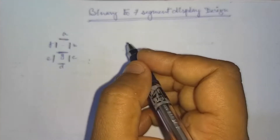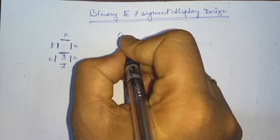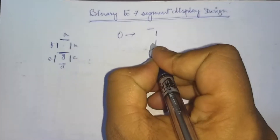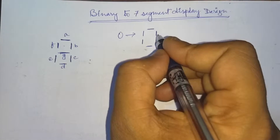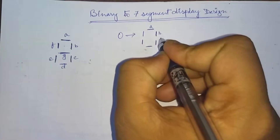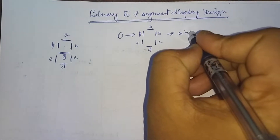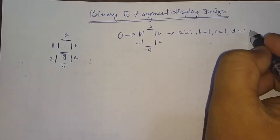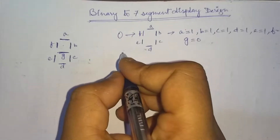Let us first see how we can represent any decimal number using this 7-segment display. Starting with 0, we represent it by setting the corresponding segments to 1. That means A equal to 1, B equal to 1, C equal to 1, D equal to 1, E equal to 1, F equal to 1, and G equal to 0.